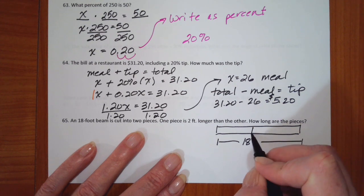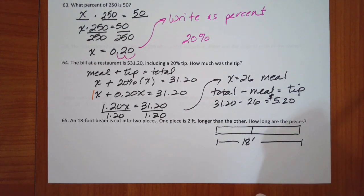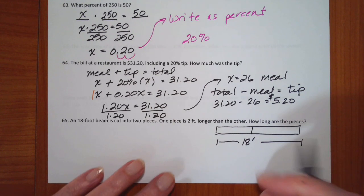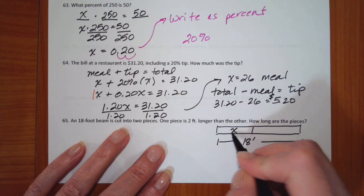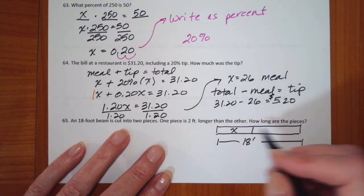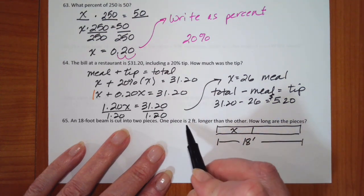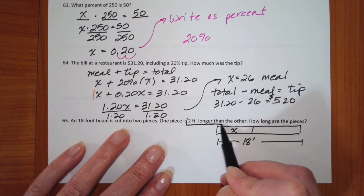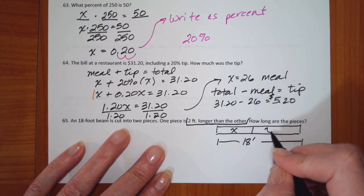Now these two are not equal. One is longer than the other. Well, I'm going to call this one x. And this one is two feet longer than the other. So this is going to be x plus 2.